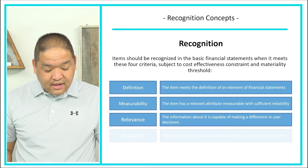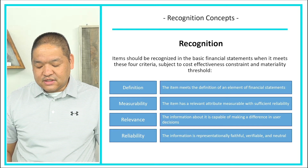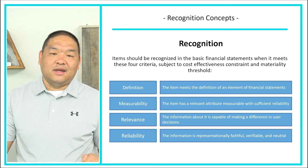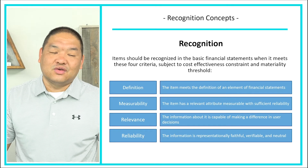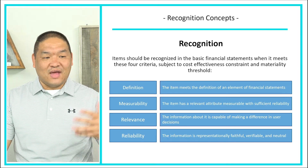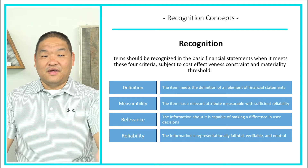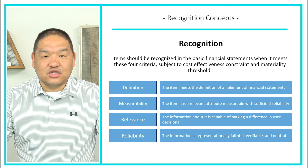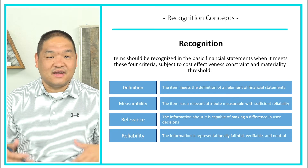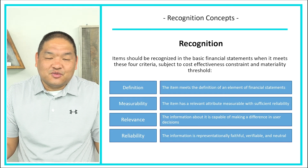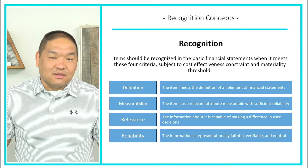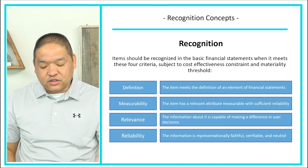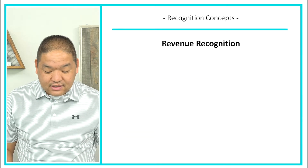The fourth criterion is reliability — the information must be representationally faithful, verifiable, and neutral. For example, if a sales manager says 'book a hundred thousand dollars of revenue because we sold something,' we need more than that. Does that manager have a signed contract and evidence of shipment to the customer? We know why a salesperson might want to inflate revenues before year-end, so we need reliable evidence we can actually rely on.